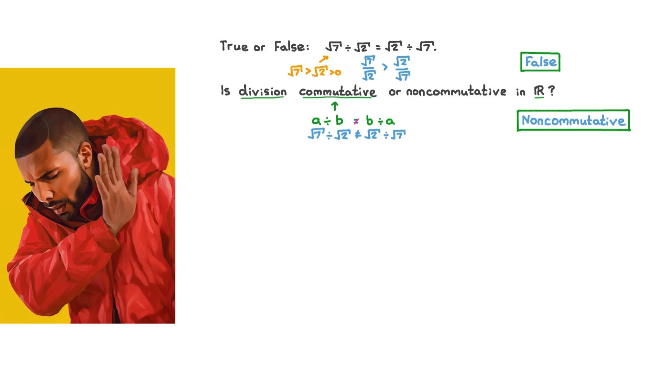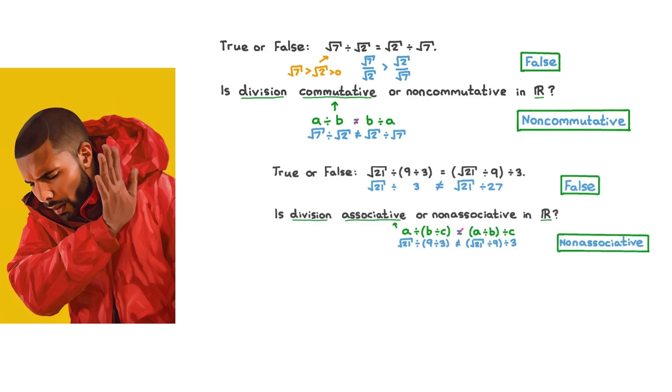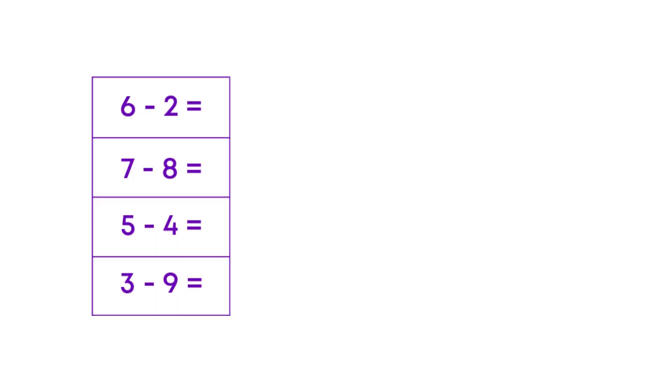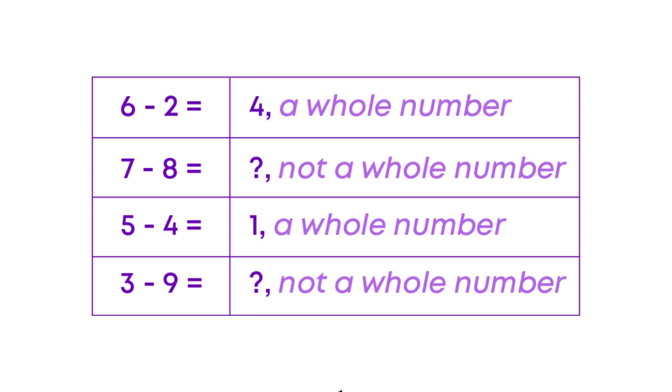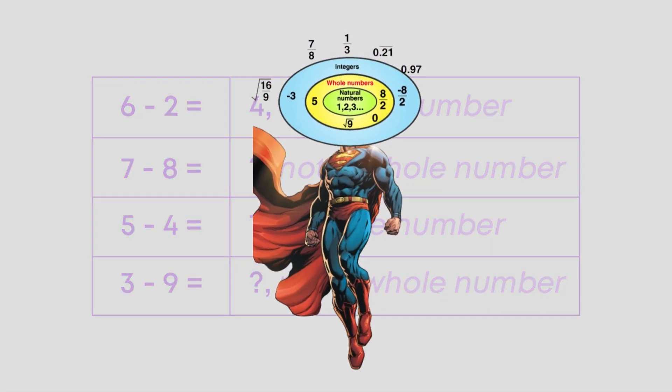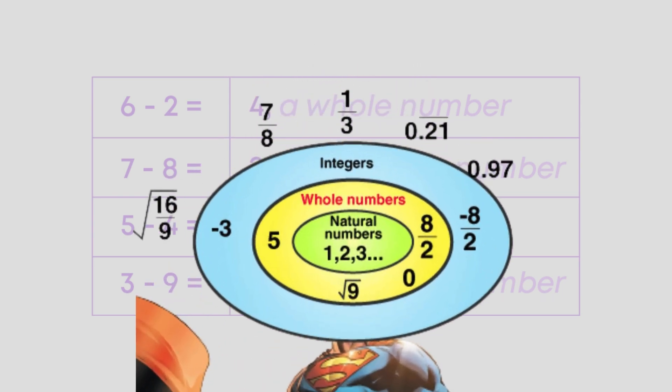Division is neither commutative nor associative. A whole number divided by a whole number does not always result in a whole number. This gives rise to the rational numbers, which are the numbers that can be expressed as the quotient of two integers.